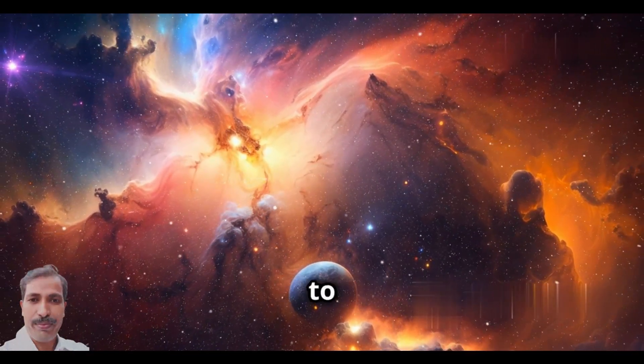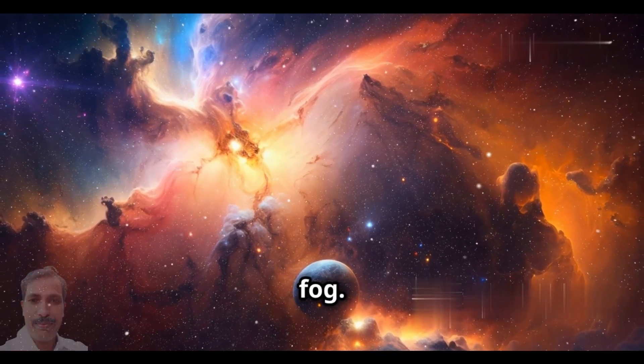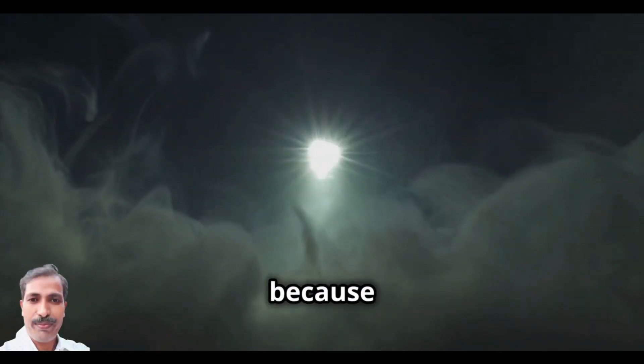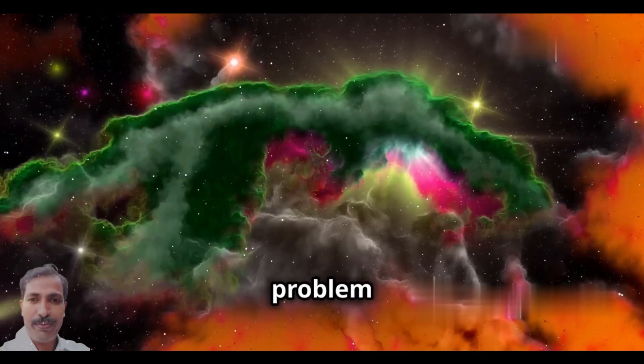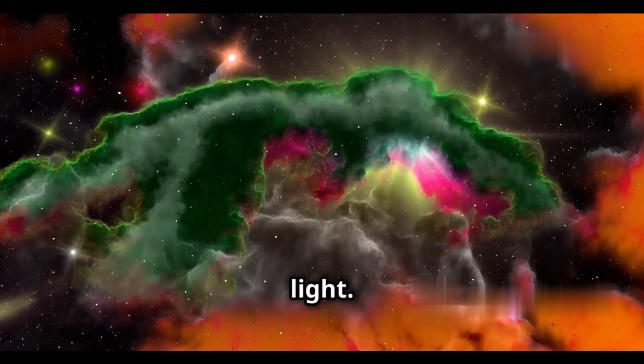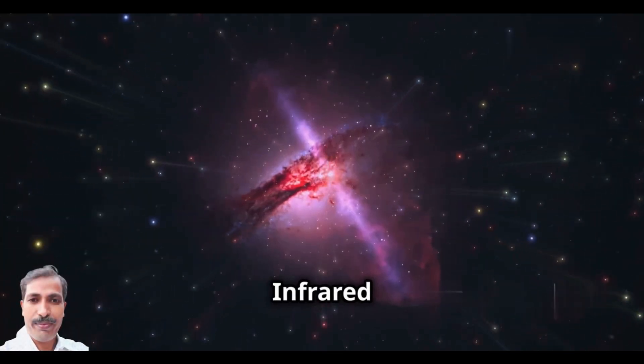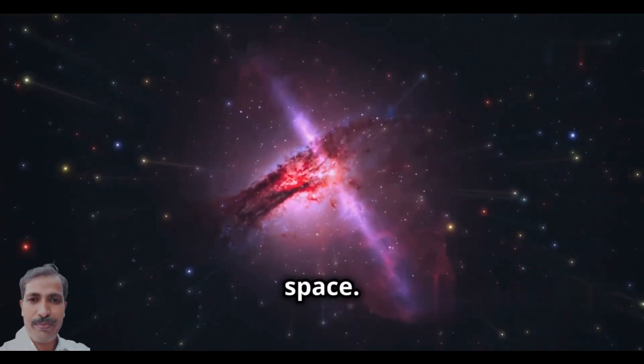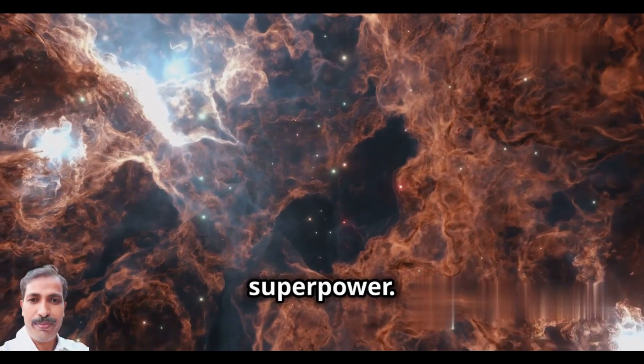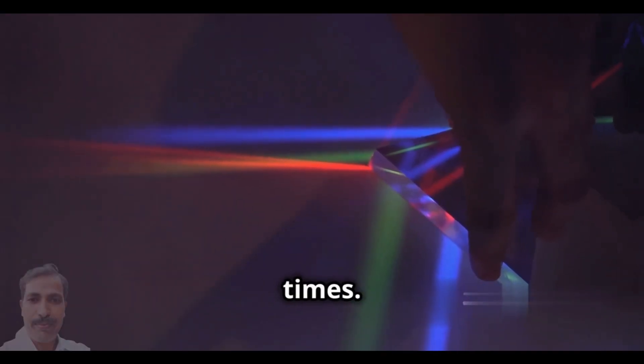Imagine trying to see a candle that's far away through really thick fog. You can't see the candlelight well because of the fog. This is the problem astronomers have when they use visible light. Clouds of gas and dust block our view. Infrared light can go through these clouds in space. JWST's infrared vision is like a superpower. It shows us the universe's earliest times.